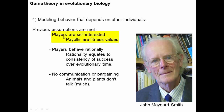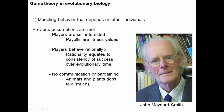In game theory and evolutionary biology, John Maynard Smith is the biggest name associated with bringing this into biology. He did this with a goal of modeling behavior that depends on other individuals. The assumptions are met: players being self-interested is met if we think of payoffs as fitness values. Players behaving rationally is met if rationality equates to consistency of success over evolutionary time — if certain behaviors lead to higher fitness consistently, then the evolution of those behaviors is equivalent to players making rational choices.